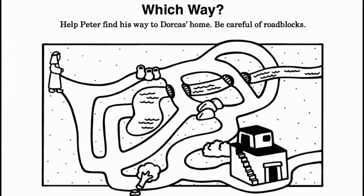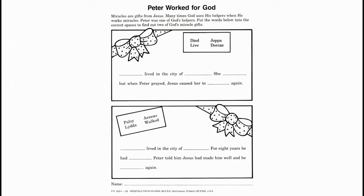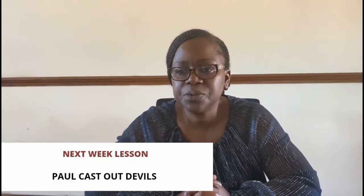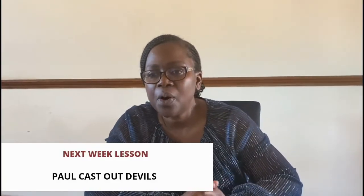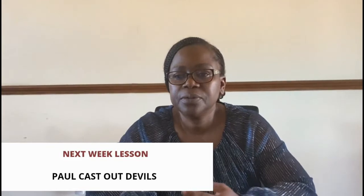Activities: for ages two to five, help Peter find his way to Dorcas' home — please be careful of road blocks. For ages six to eight, put the words below into the correct space to find out two of God's miracle gifts. Our lesson for next week is titled 'Poor Cast Out Devils.' That is the end of our lesson. See you next Sunday.